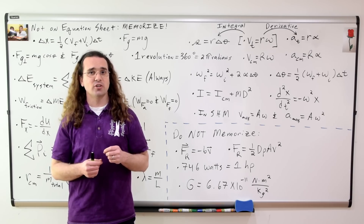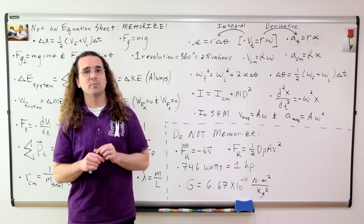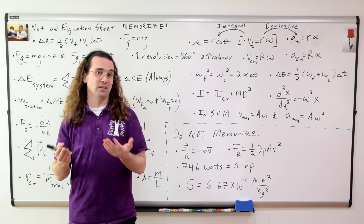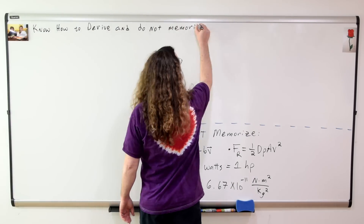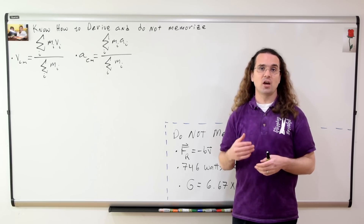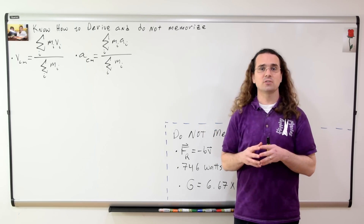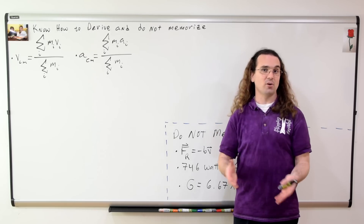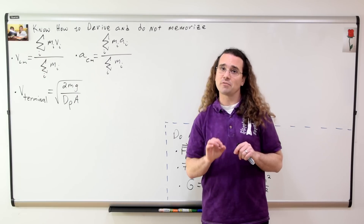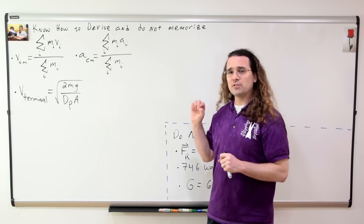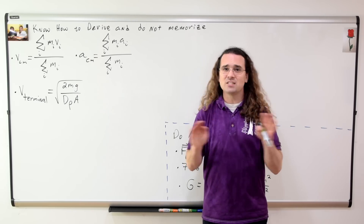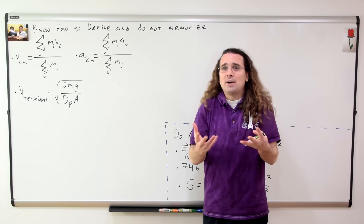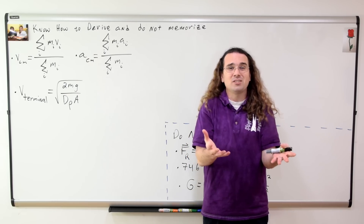Now let's talk about equations which I suggest you know how to derive — again, do not memorize them, know how to derive them. These are all derivations we did during our AP Physics C Mechanics Review videos. The velocity and acceleration of the center of mass of a system of particles: take the derivative with respect to time once and then once again of the position equation. The terminal velocity of an object falling near the surface of a planet — this is specific to that situation, but if you know how to derive it, you will know how to derive terminal velocity in other situations, which is most likely what they'll do on the AP exam.